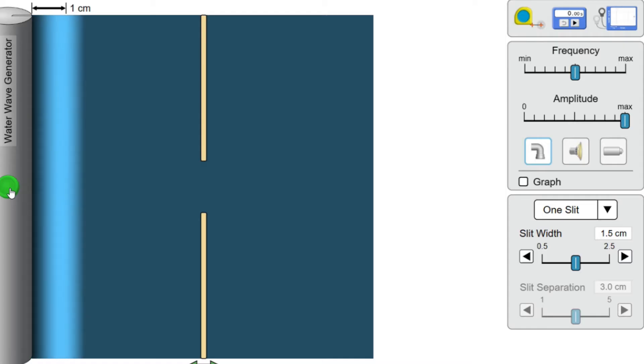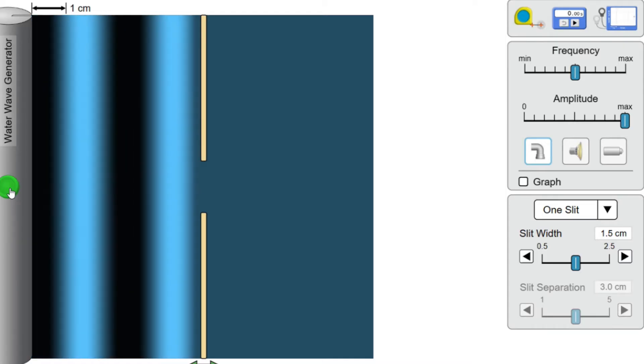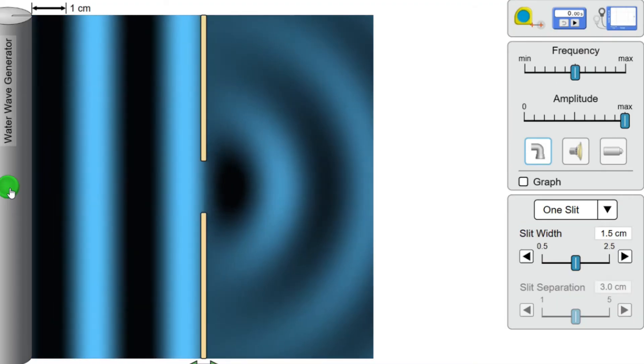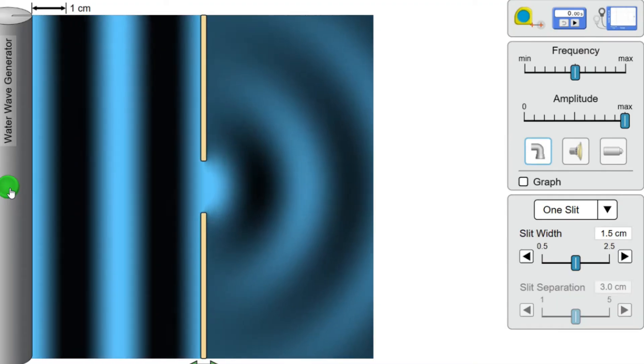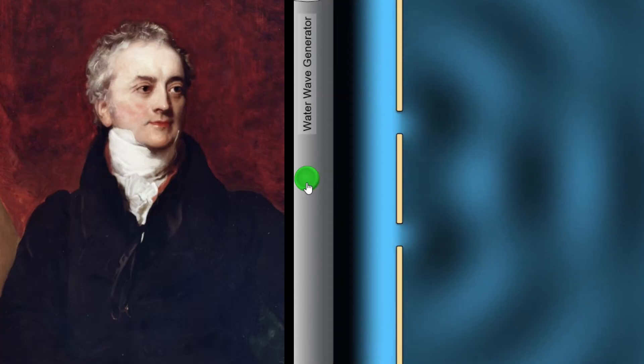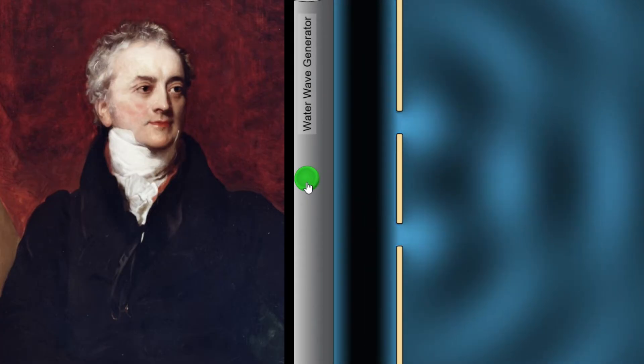We can also see diffraction with water waves. Instead of these water waves going in straight lines after they pass through this opening, they spread out to form a semi-circular shape. Diffraction was key to Thomas Young's 1801 experiment, in which he discovered that visible light behaves like a wave.